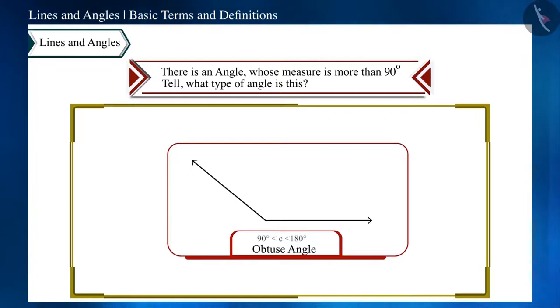According to the definition of an obtuse angle, if the measure of an angle is more than 90 degrees and less than 180 degrees, then it is called an obtuse angle. According to the given statement, if the measure of any angle is more than 90 degrees, then it can be an obtuse angle, but only if its measure is less than 180 degrees.